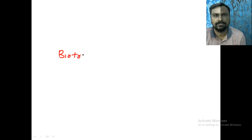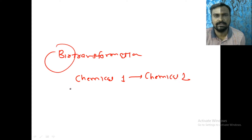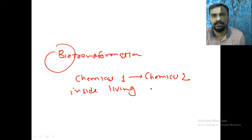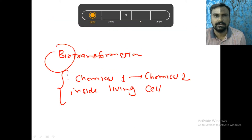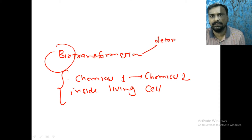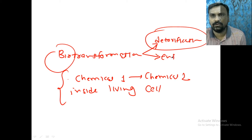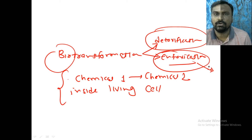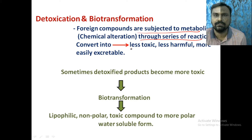Now, what is biotransformation? Biotransformation is when from one chemical, another chemical is formed. Bio means inside the living organism, living cell. So in our body, one chemical compound is converted to another chemical compound — that is called biotransformation. It can be detoxification, where toxic substances are excreted, or it can cause intoxication, where a toxic compound becomes more toxic. The foreign compounds are subjected to metabolism through a series of reactions and converted to less toxic and more excretable forms.